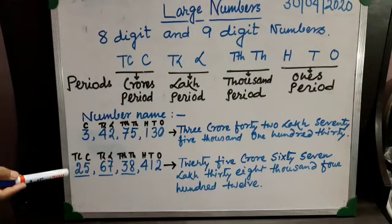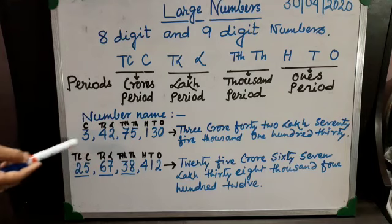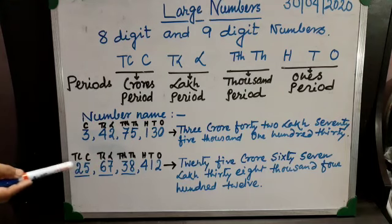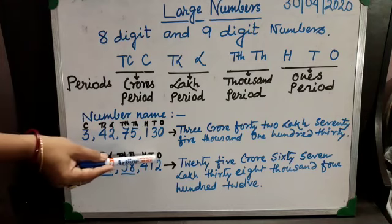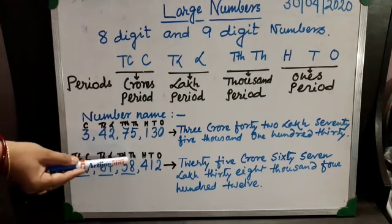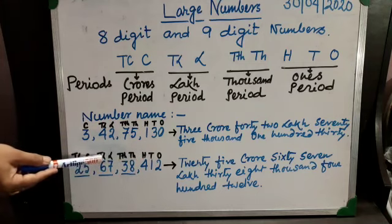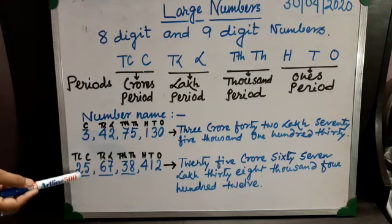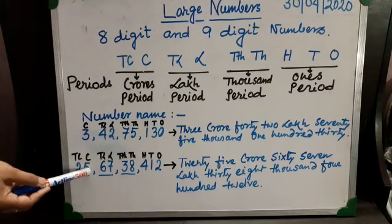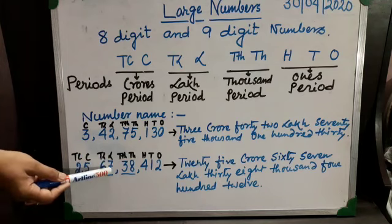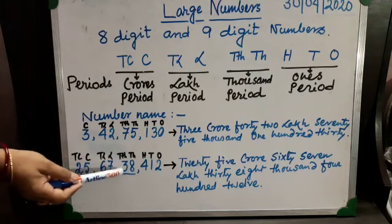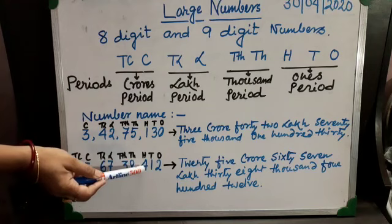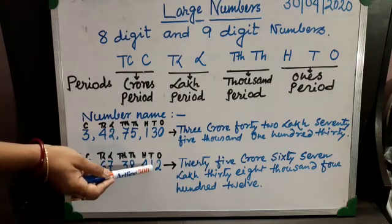Here I have written another nine digit number and also I have written the place value chart. You can see: ones, tens, hundreds, thousands, ten thousands, lakhs, ten lakhs, crores and ten crores. So the number reads twenty five crore, sixty seven lakh, thirty eight thousand, four hundred and twelve.